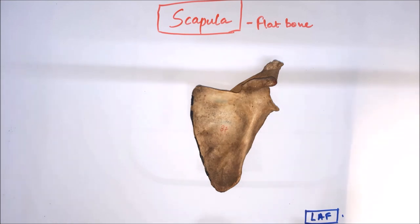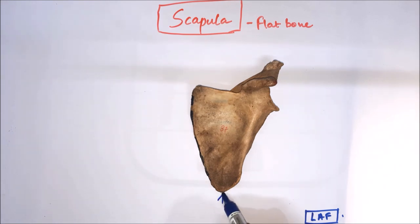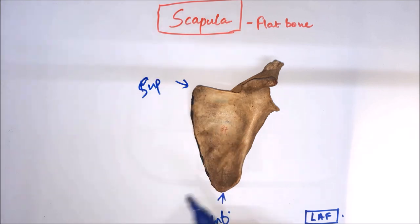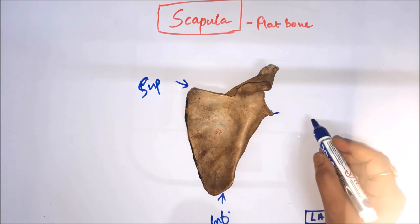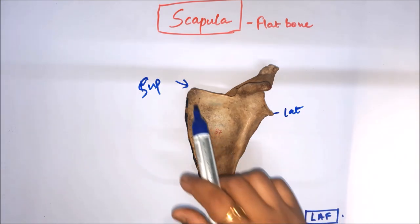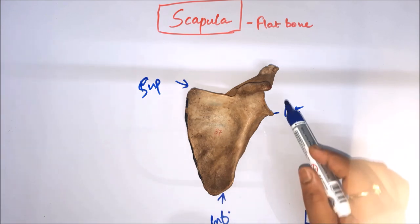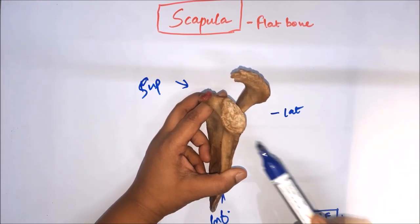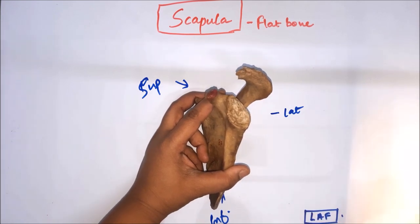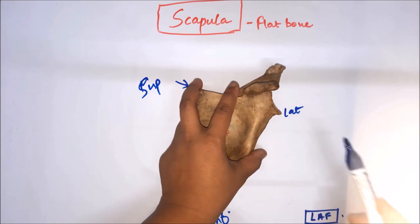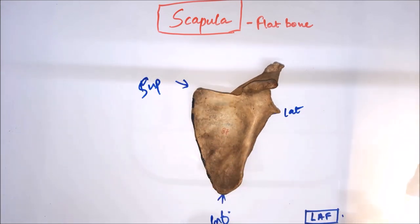Let us see its features first, then we will determine the sides. As you can see, it is a triangular bone having three borders and three angles. This is the inferior angle, this is the superior angle, and this is the lateral angle. The lateral angle consists of one rounded cavity known as the glenoid cavity, which lies on the lateral side.